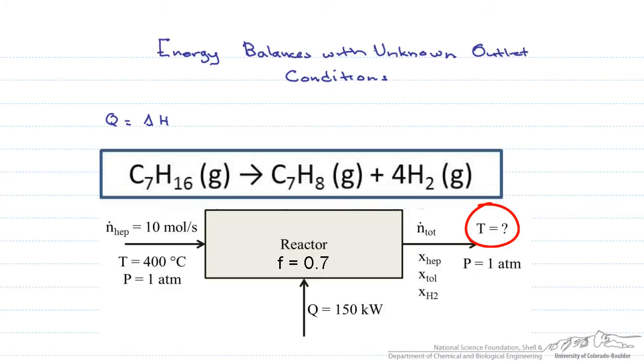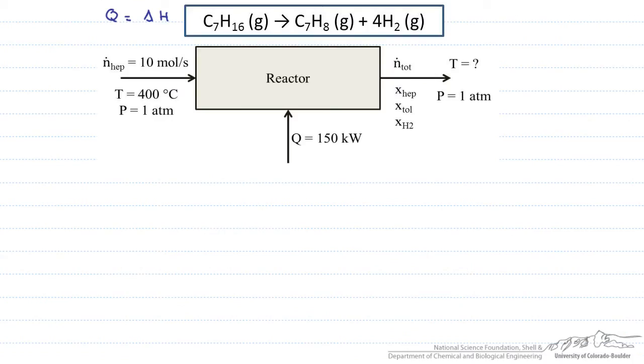Again, we are going to assume negligible work, kinetic, and potential energy. The first thing we start with is our material balances. We will start with the fractional conversion such that 0.7 equals the moles in minus the moles out, divided by the moles in. Solving for this, we find that the moles out of heptane is 3 moles per second.